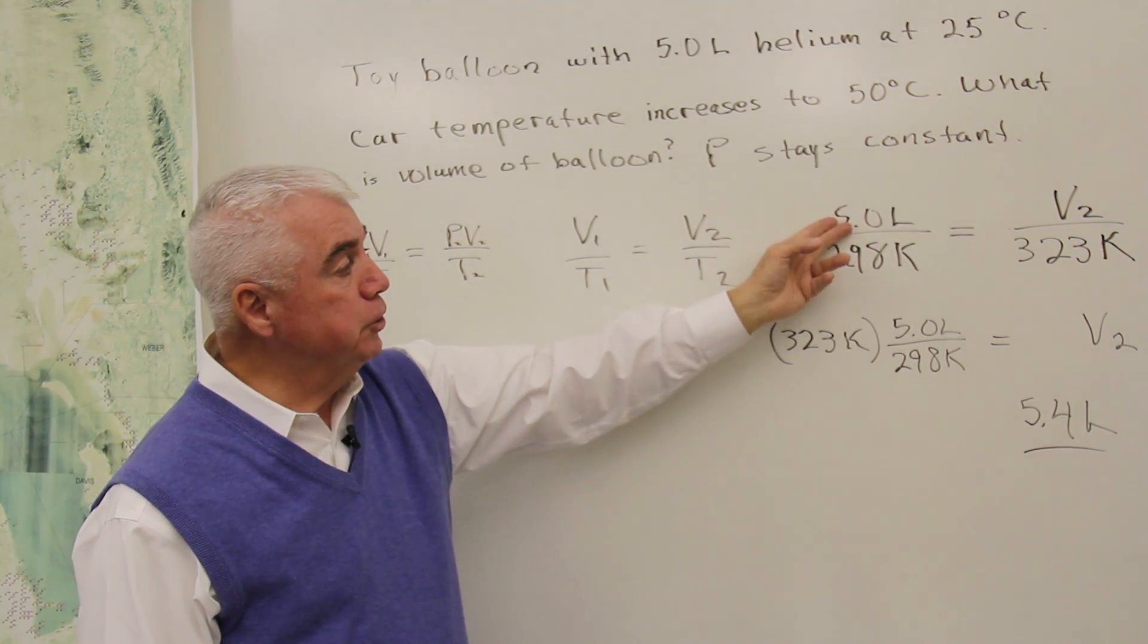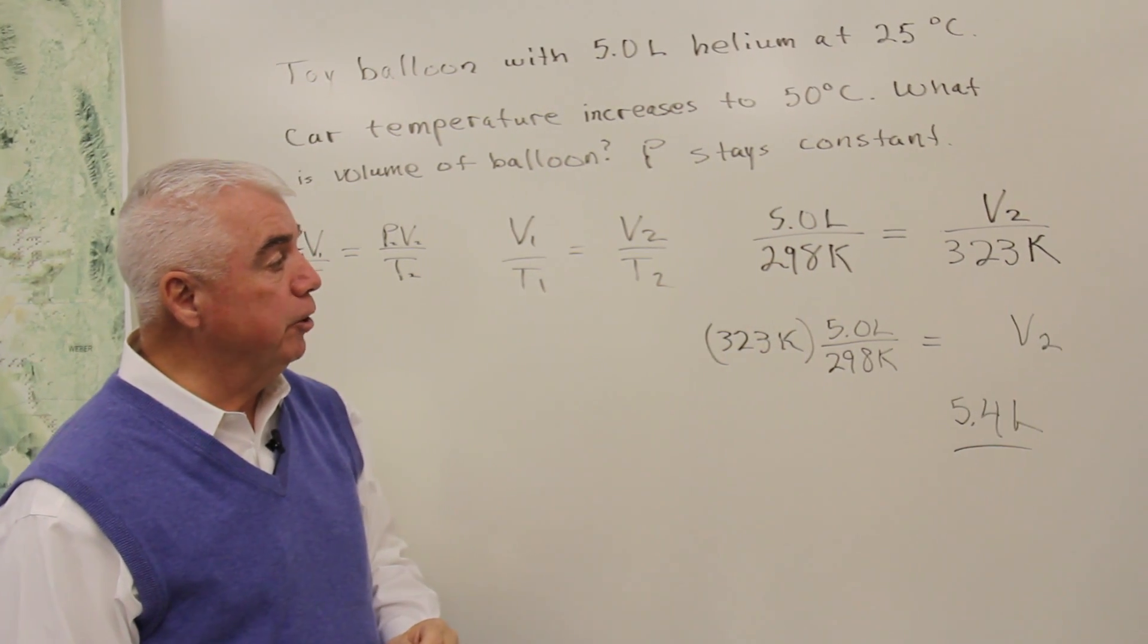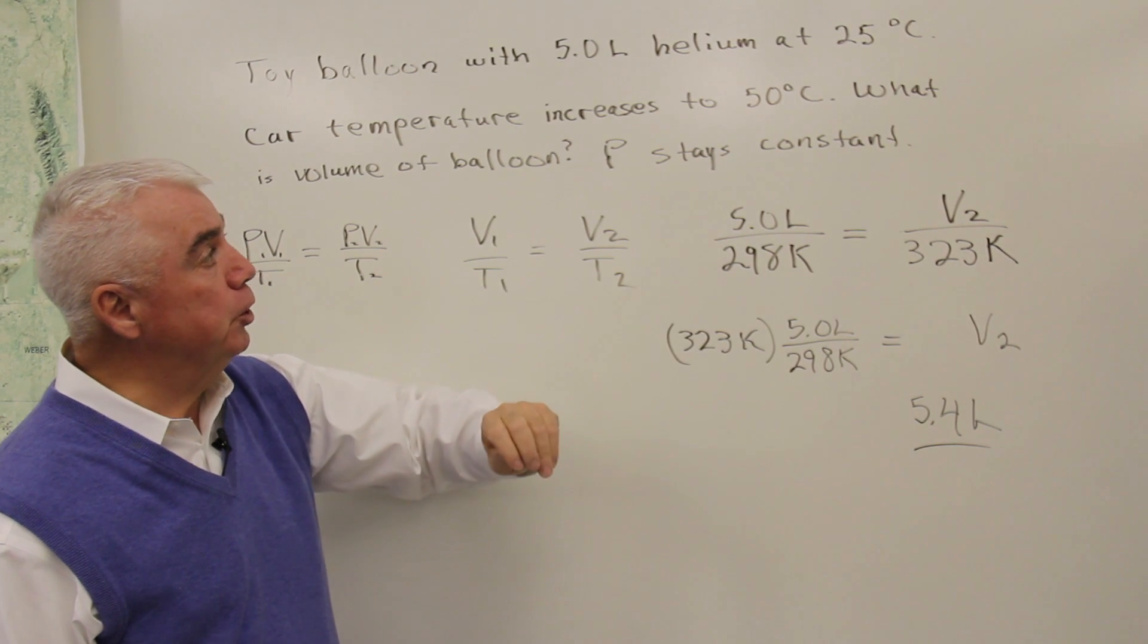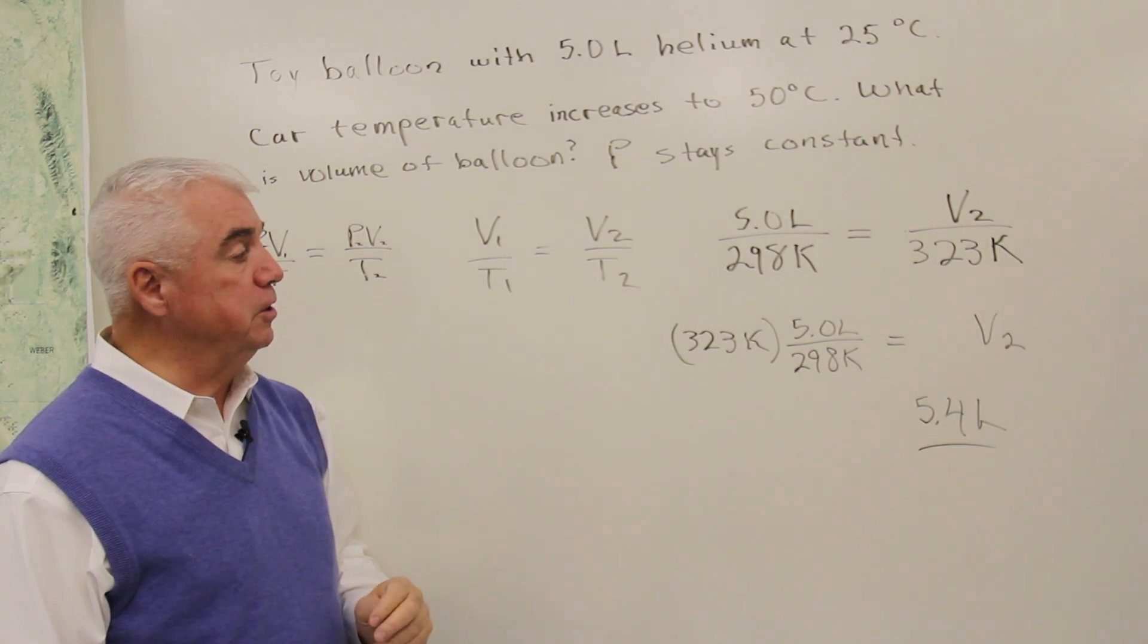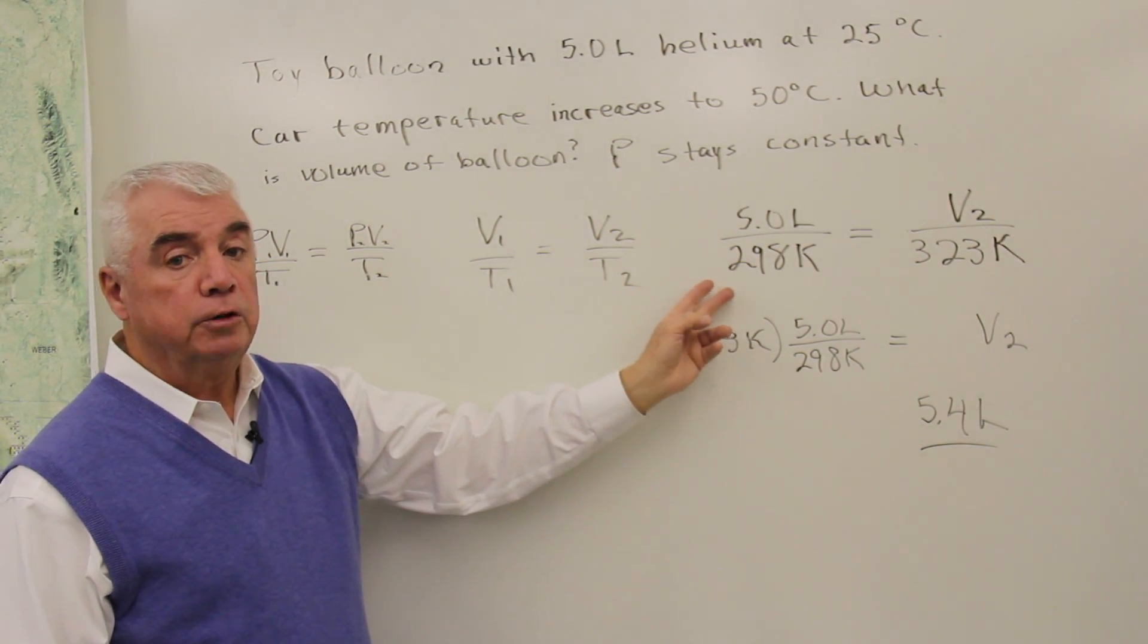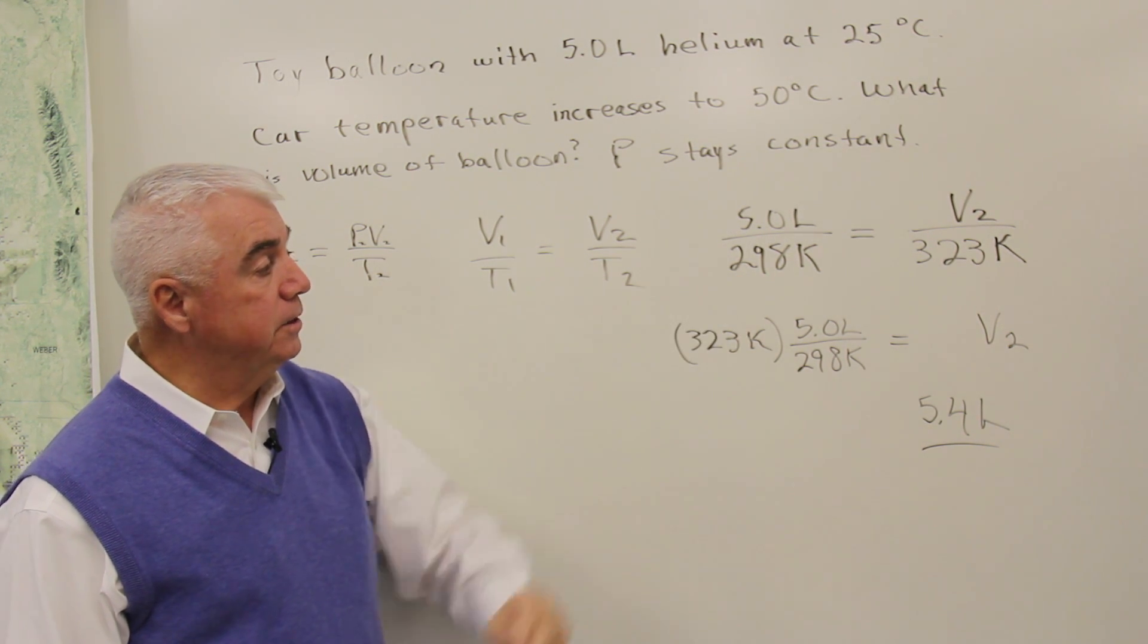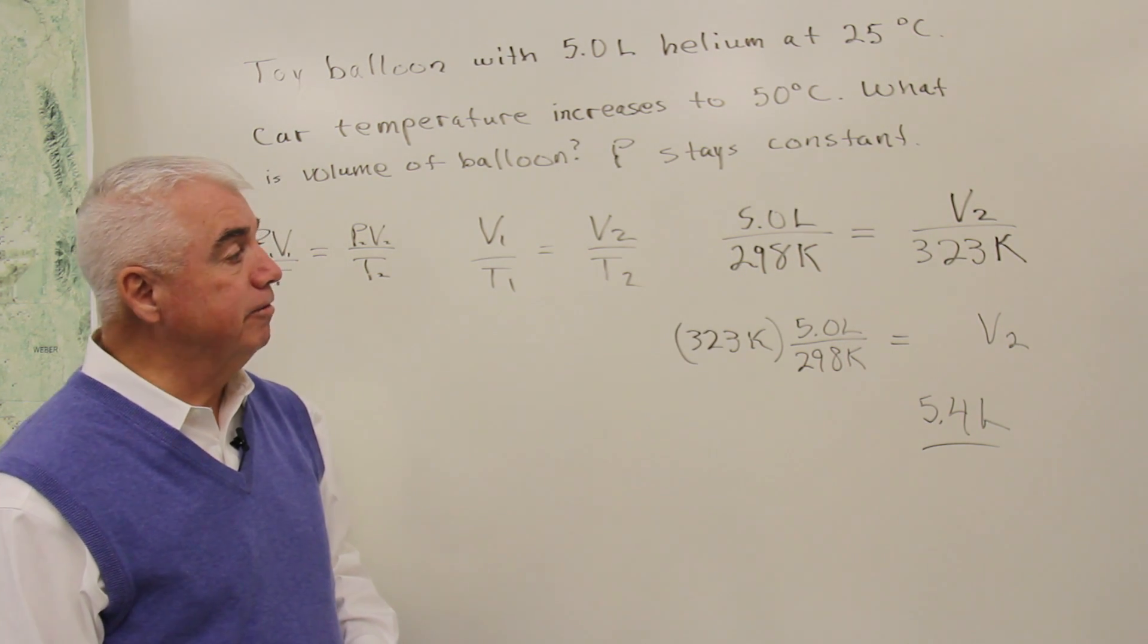So the initial volume is 5.0 liters. The initial temperature is 25 degrees centigrade. We'd add that to 273 to get 298 in kelvins.